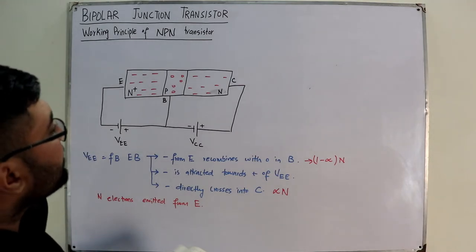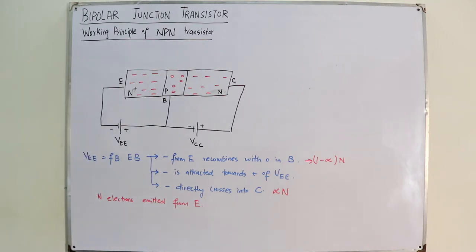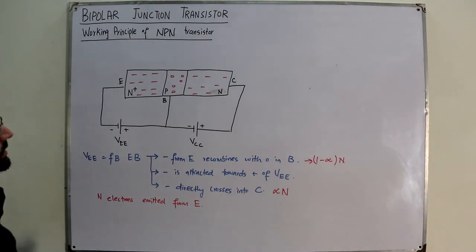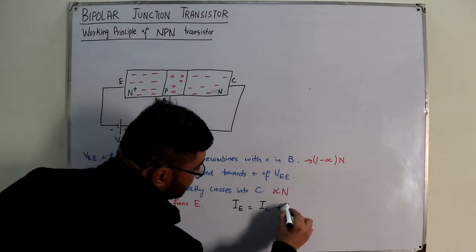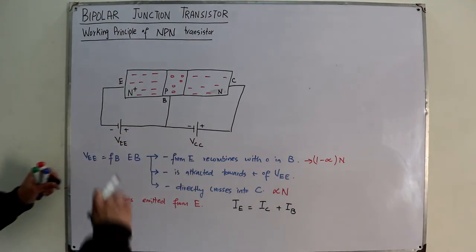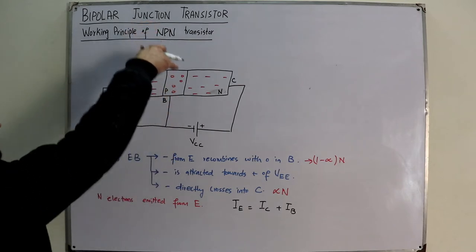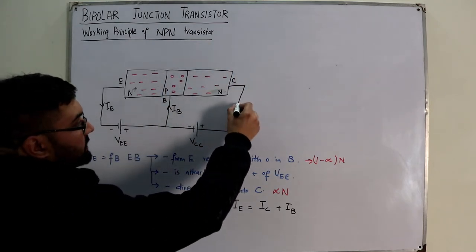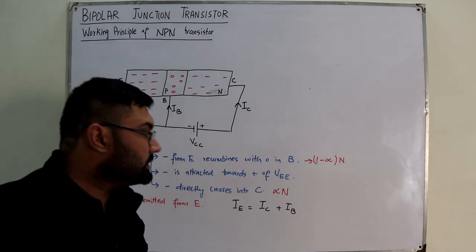Junction J2, the collector-base junction, is reverse biased, so we also have a reverse bias current — a minority charge carrier current. The emitter current IE equals IC plus IB. Since electrons move toward the collector side, the current direction for IC is accordingly set. Similarly, IB is the recombination current flowing out of the base terminal. By KCL, the leaving current equals the entering current: IE = IC + IB.